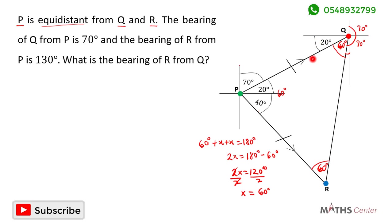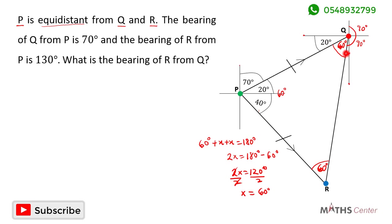Looking at the diagram again, from the north line at KL we have 20 degrees to the line KP, and we have just found that the angle from KP to KR is 60 degrees. The total angle from north to east is 90 degrees, so the small remaining angle equals 90 degrees minus 20 degrees minus 60 degrees, which gives us 10 degrees.